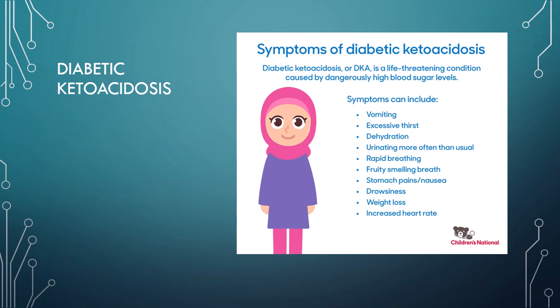We're going to jump right in and talk about DKA, diabetic ketoacidosis. Typically we see DKA with type 1 diabetics more so than we do with type 2 diabetics, although it can occur with both patients. The big thing that we're looking at with diabetic ketoacidosis, or DKA, is the lack of insulin.